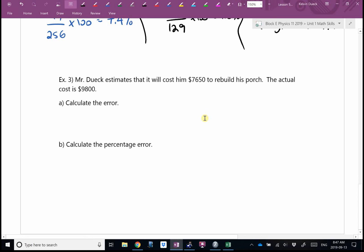Mr. Duick estimates that it will cost him $7,650 to rebuild his porch. When he actually rebuilds his porch, it costs him $9,800. What was his error? On your calculator, you could just type 9,800 minus 7,650. I can do that in my head. $1,150? Double checking. $1,150? $2,000? Oh, geez. Carry a one. $2,150. I can't do it in my head, apparently. Wow. What is that as a percent? $2,150 divided by $9,800.